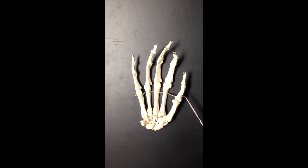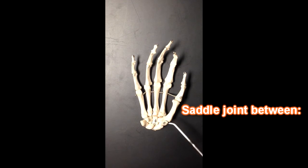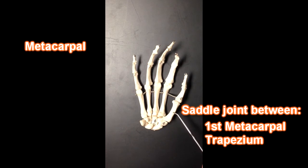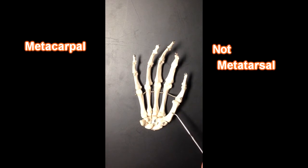Now this side, digit number one where the thumb is, this digit number one only has two phalanges, so we say the proximal and distal phalanx, no middle phalanx here. There are saddle joints here between the trapezium and the first metacarpal, and we say metacarpal and not metatarsal when we're talking about bones in the hand.